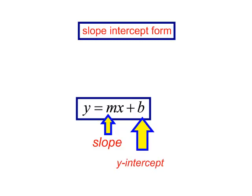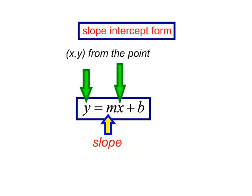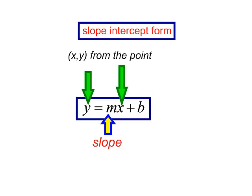Many times, they do not give me the y-intercept. If this is the case, I have to plug in the x and the y that they give me from the point. Then I plug in the slope, I do a little algebra, and I solve for the y-intercept, which is b.